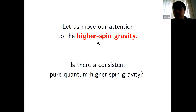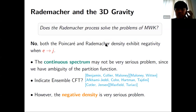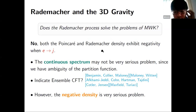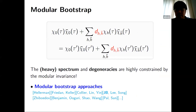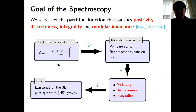Regarding the question of what defines pure gravity versus higher spin gravity: our starting point is the perturbative excitation partition function, and we require that the light spectrum of the modular invariant partition function consists only of these perturbative excitations. That's why we call it pure gravity. For higher spin gravity, the light spectrum would include additional higher spin fields organized by the W_n vacuum character rather than just the Virasoro vacuum character.